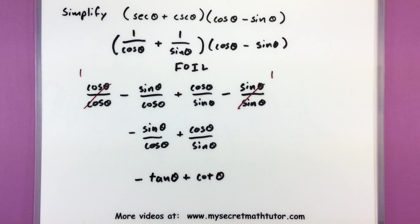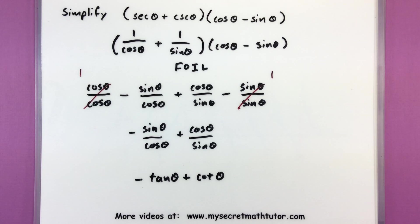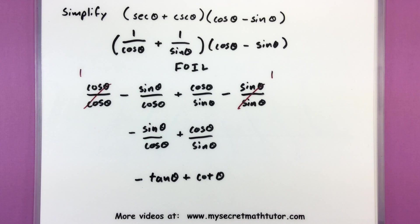Hopefully you get the idea that if you can change things into sine and cosine, you can better see what might cancel out and what will combine more easily. Of course, knowing your identities for sine and cosine is a must for this process — definitely comb over your identities and start memorizing any of them that involve sine and cosine. If you'd like to see some more videos, please visit MySecretMathTutor.com.